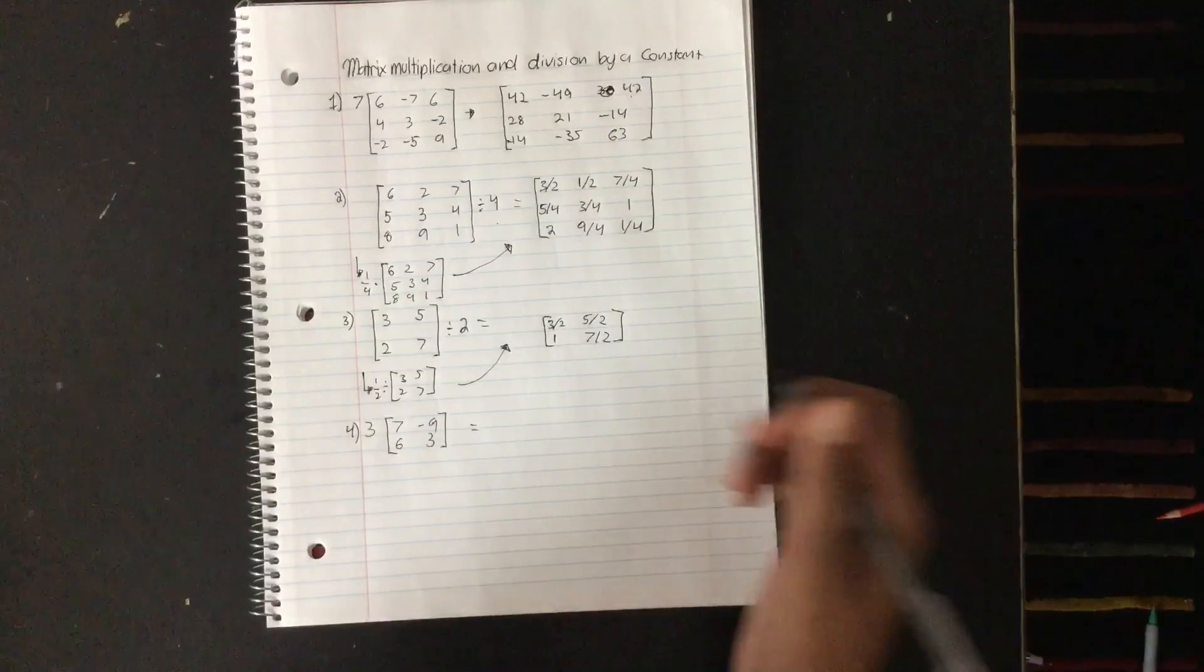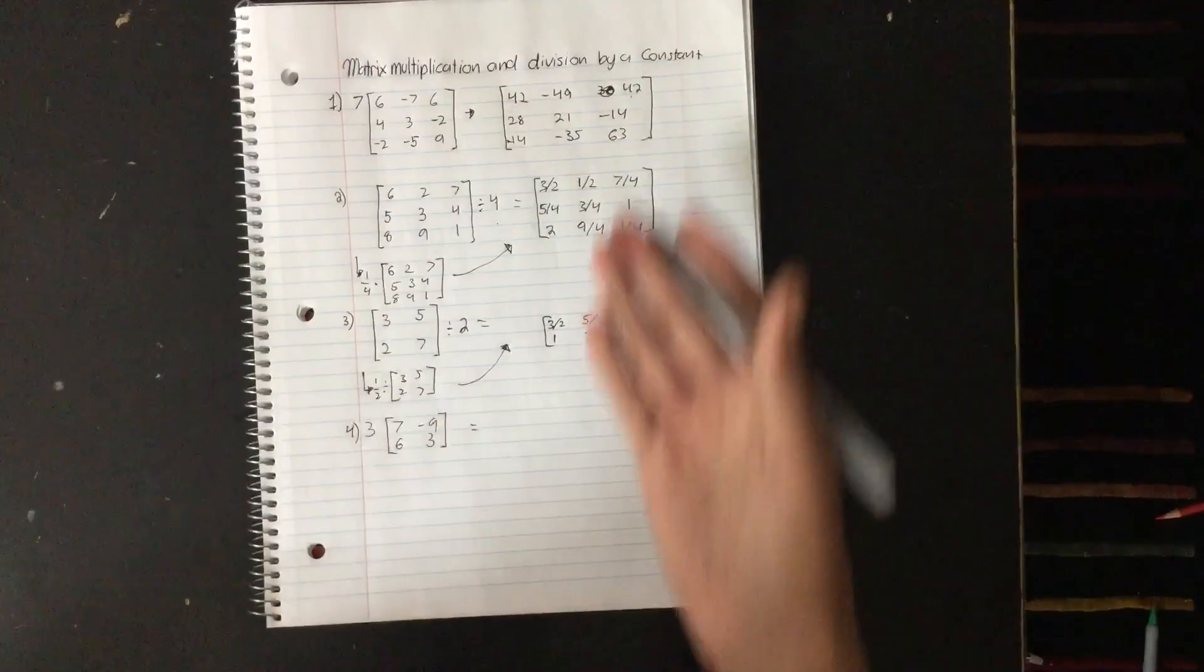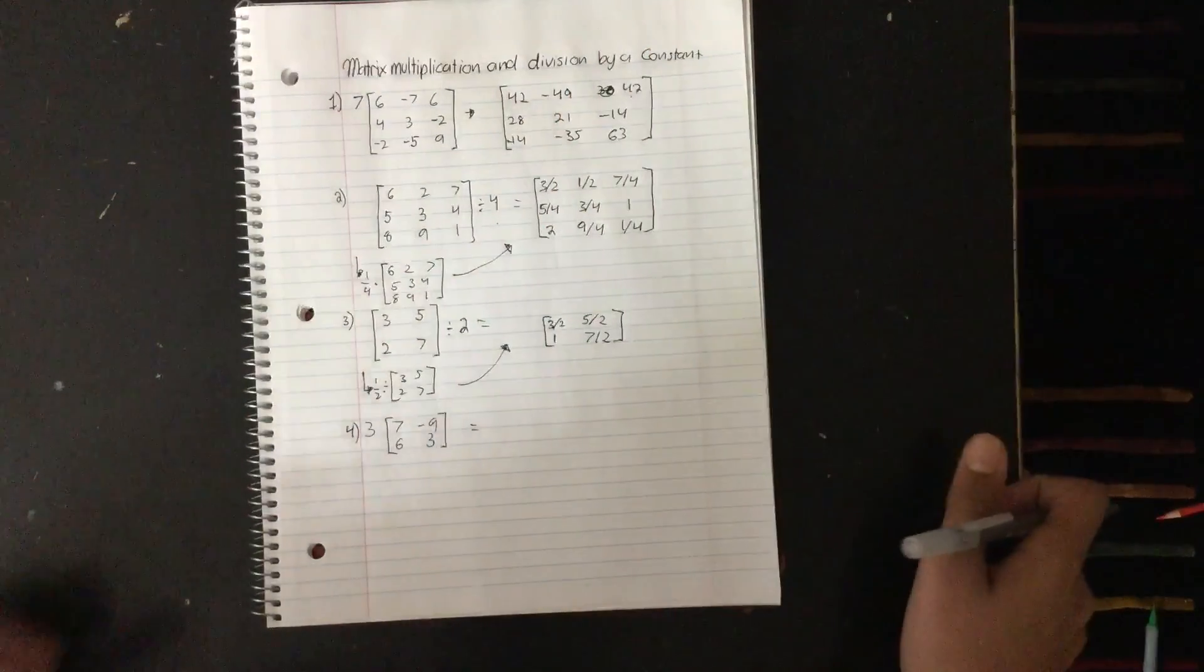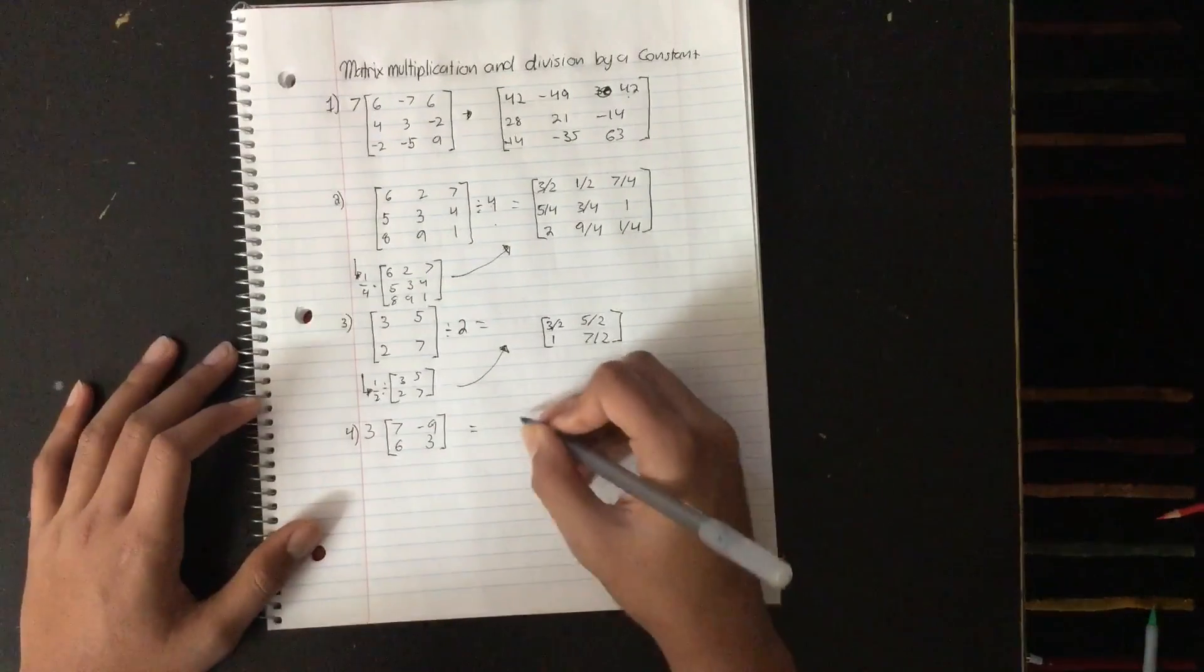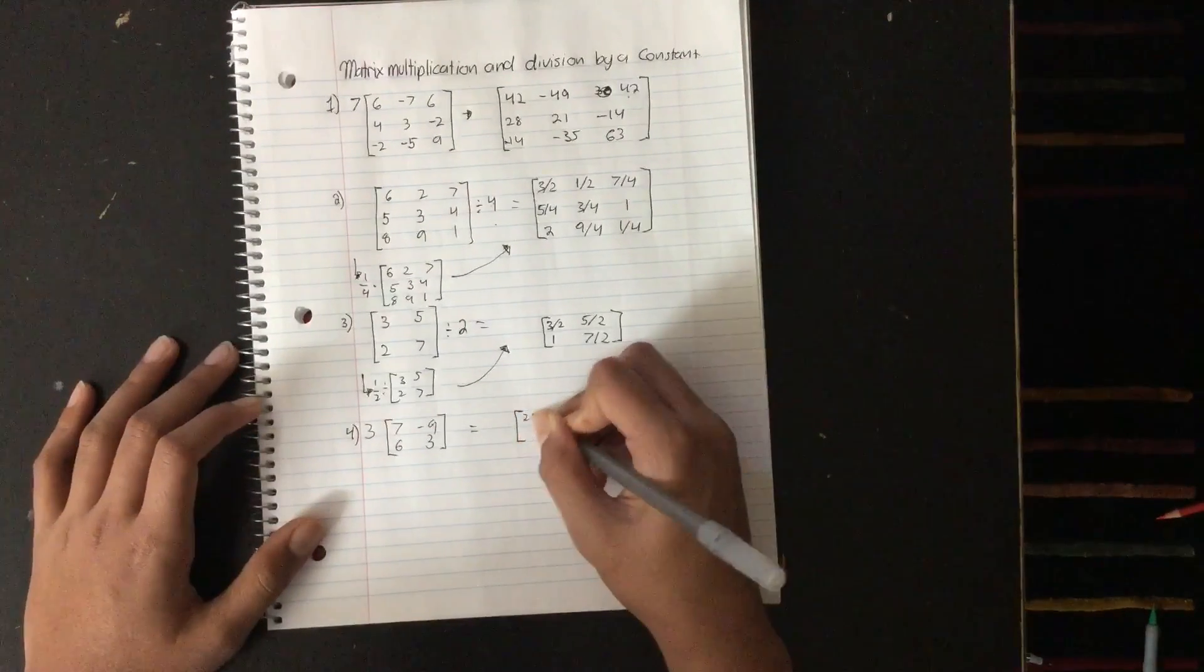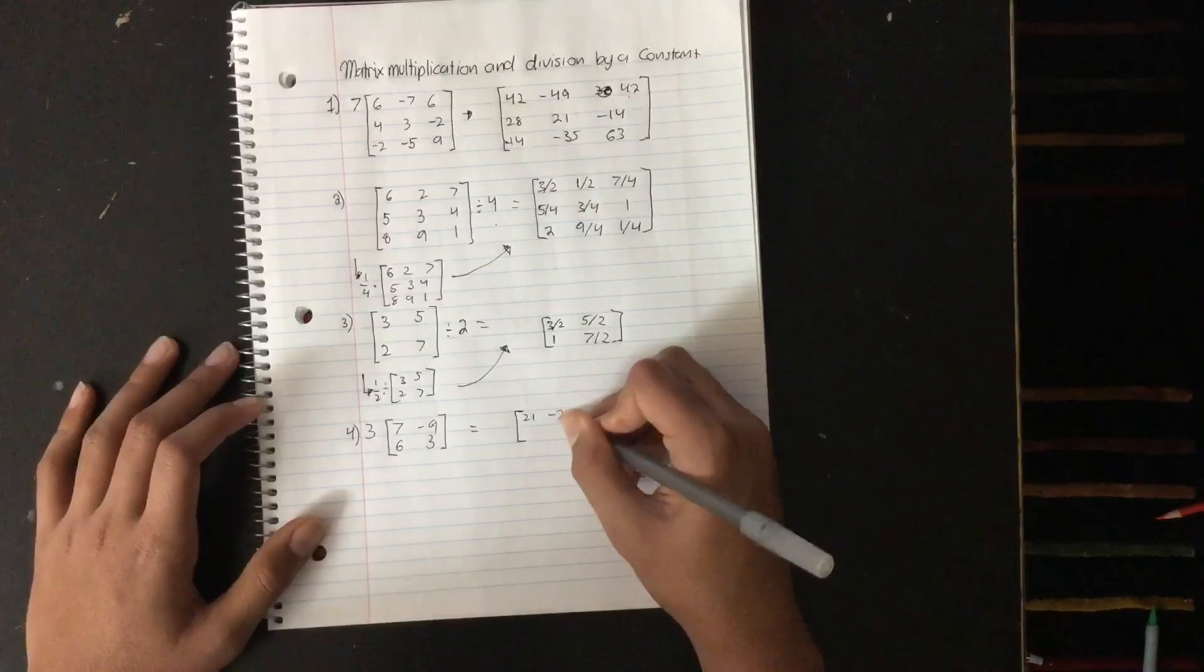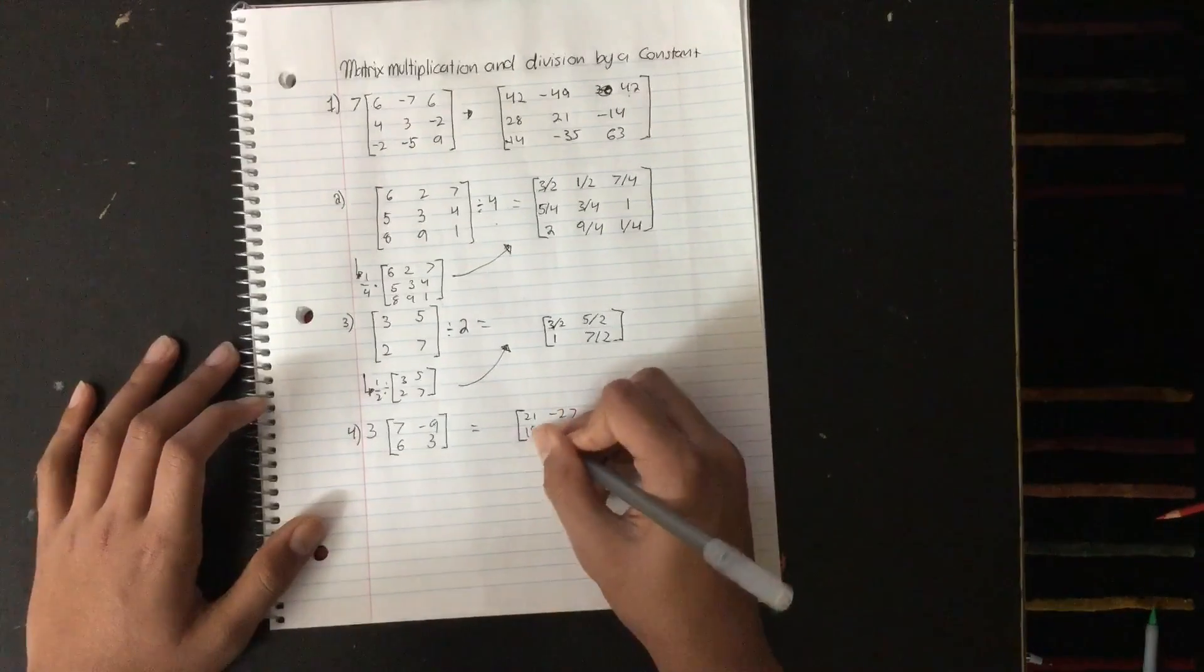So if you ever get these questions, don't stress out. Just do it really simply. Don't have to stress out about it. So next thing you want to do here is 7 times 3. It's just easy. 21, negative 27, 18, and 9.